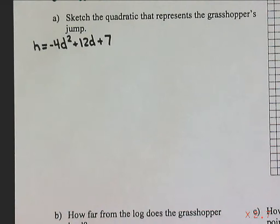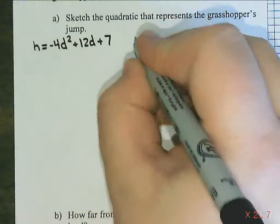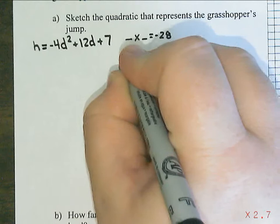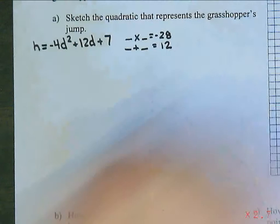h equals negative 4d squared plus 12d plus 7. And I see that this is a trinomial, so I'm going to try to do decomposition, and I'm going to multiply the first and the last, so negative 4 times 7 is negative 28. So we're looking for two numbers that multiply to negative 28, and they also need to add to the middle term of 12.